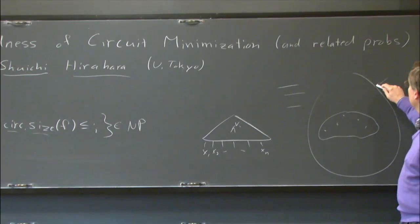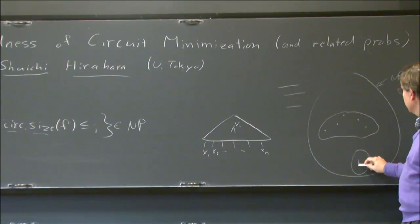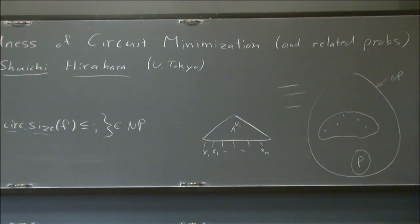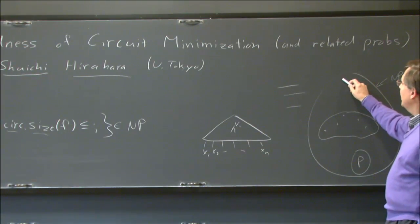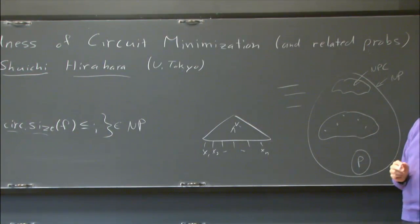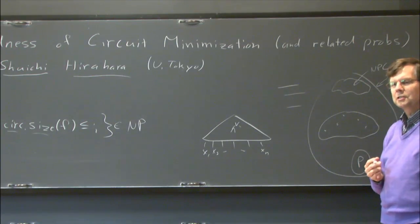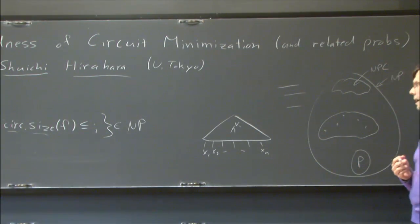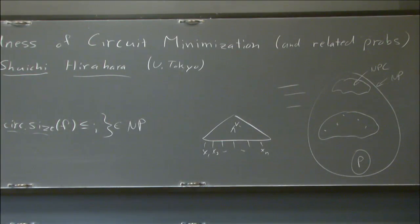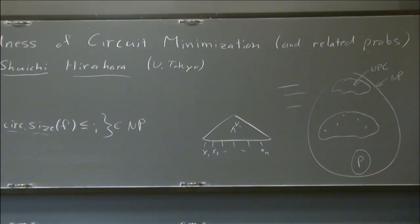On the other hand, almost any time somebody's able to prove a theorem about this problem, it holds for all of these variants. So you can sort of think of this as a cloud of problems, all of them sitting inside NP. There are very good reasons to think that none of them are in P, and opinion is divided as to whether or not these problems can be NP-complete.